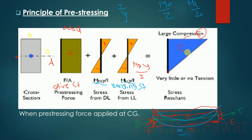This is the main principle of pre-stressed concrete — the full section is in compression. The principle of pre-stressing is that we introduce internal stresses in a planned manner. A required amount of force is applied to the beam through the tendon. Whatever tensile stress is required, we calculate it, and by developing internal stresses in a planned manner, we counteract those tensile stresses.